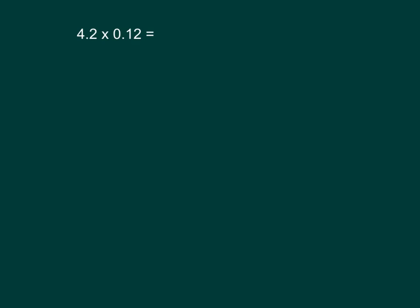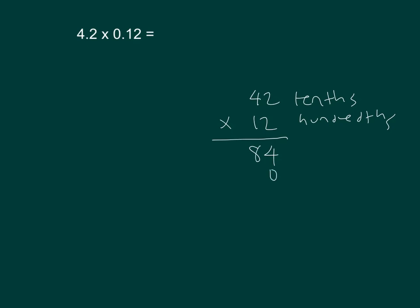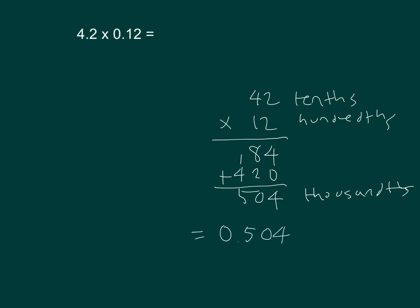4 and 2 tenths times 12 hundredths. That's 42 tenths times 12 hundredths. Looks like I'll get thousandths. 2 times 2 is 4, 2 times 4 is 8, place a zero. 1 times 2 is 2, 1 times 4 is 4. Add them. That gives 504 thousandths, written as a decimal: 0.504.